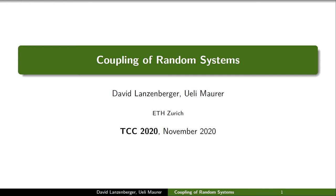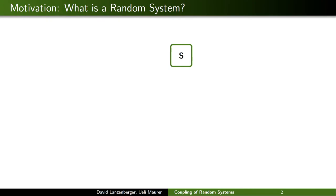Welcome to the presentation of our paper 'Coupling of Random Systems.' We want to start by giving a short motivation and explaining what we mean when we say random system. A random system is an object that operates in rounds, and in each round i you can give a query xi and receive a response yi. Moreover, each round can depend on the previous rounds, capturing the fact that the system has state, and the system can be probabilistic, meaning that each response can be sampled with some randomness.